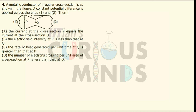The first statement is: the current at cross-section P is equal to cross-section Q. If I consider points A and B across this conductor, the current in a conductor remains the same at any cross-section. So the first statement is correct.